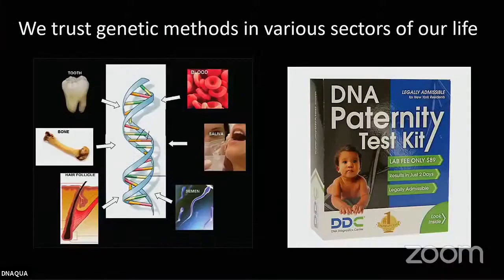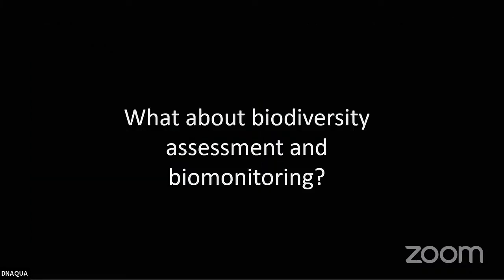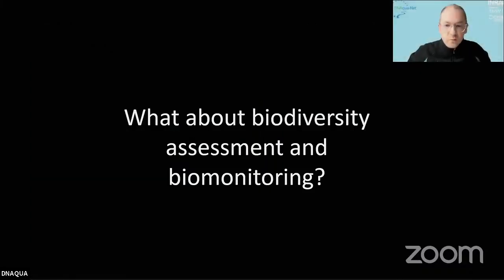Today it will be about nucleic acids, about DNA and DNA-based methods. We trust genetic methods in various sectors of our life since decades — paternity tests, forensics, and currently corona tests, which are often RNA screens. We know they can also have errors, of course, but they are quite useful.